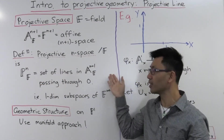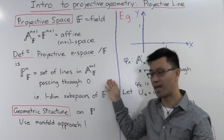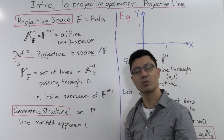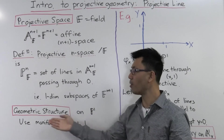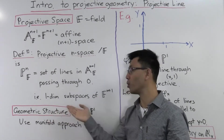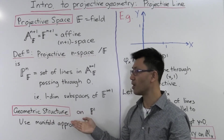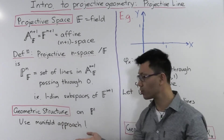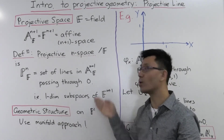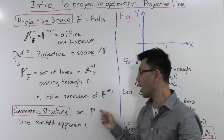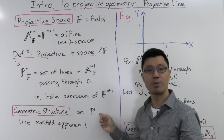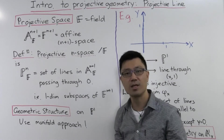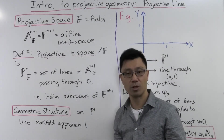That very quickly describes this set for us. The question now remains: what type of geometry do we put on this set? What I want to do now is show you how we put the geometry in the simplest case where n equals 1 — that's P^1, which is the projective line. The basic idea is that we're going to use the manifold approach.